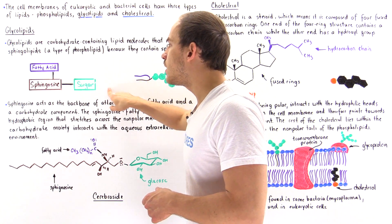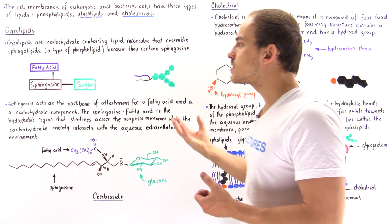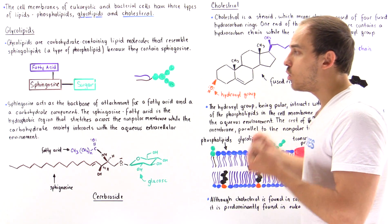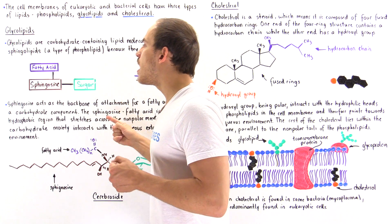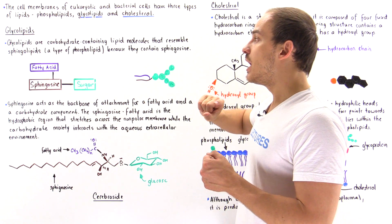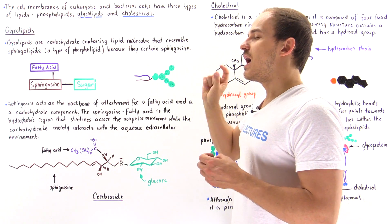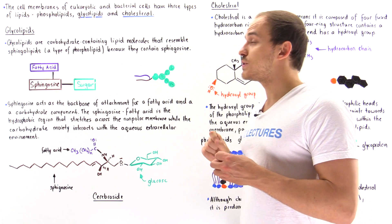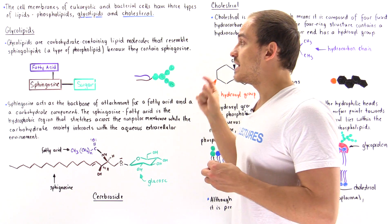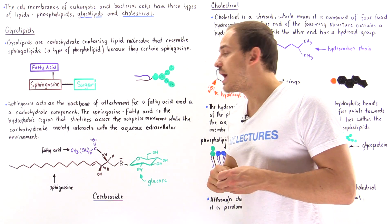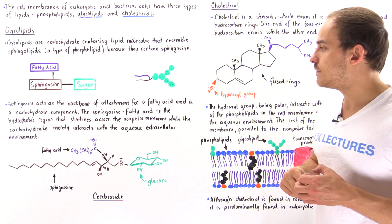The sugar molecule contains hydroxyl groups, which makes it polar. That means the sugar molecule will interact with the hydrophilic sections of those phospholipids — the heads — and it will point toward the aqueous extracellular environment.